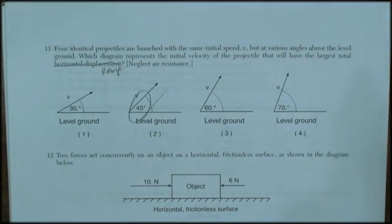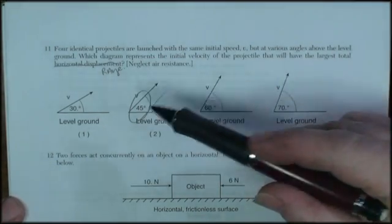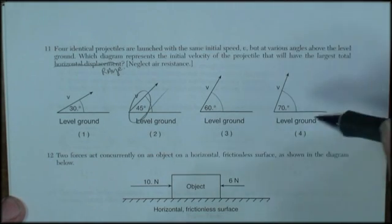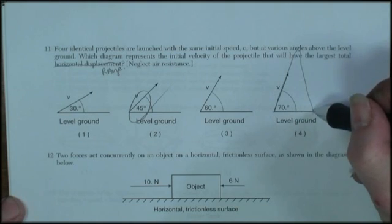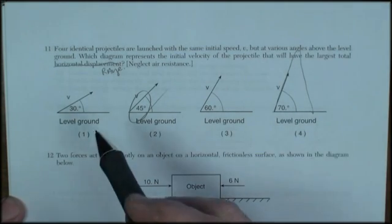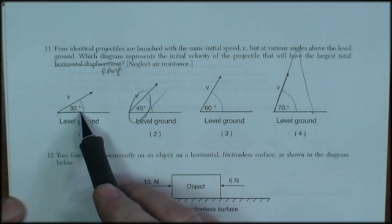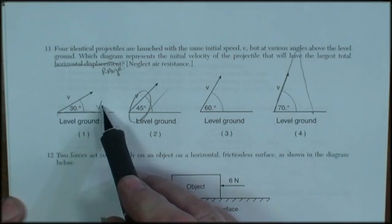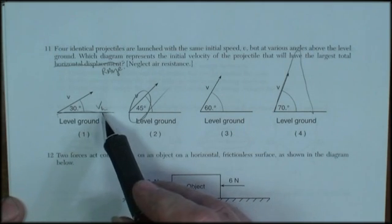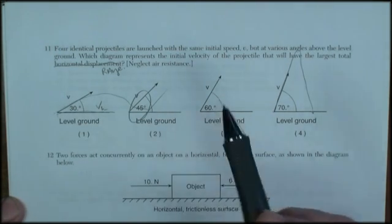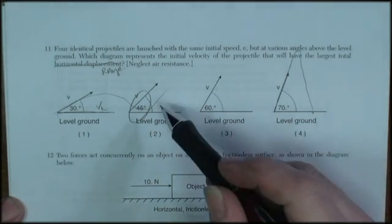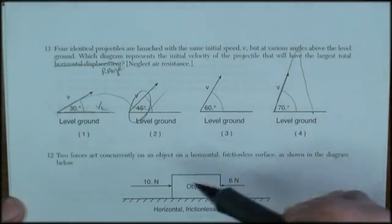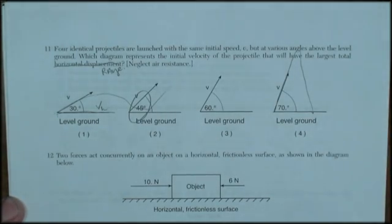In the Regents level, we really don't go into the math of it as much as we would in AP, but you are told it's 45 degrees. 70 degrees would launch it up very high but not as far. 30 degrees would have the greatest amount of horizontal velocity but it wouldn't be in the air for as long. 45 degrees is the balance of horizontal velocity and time in the air.